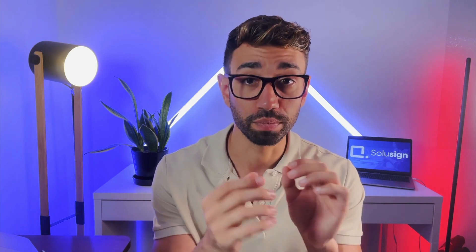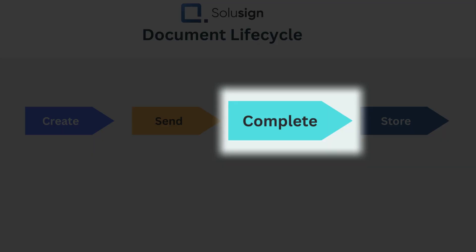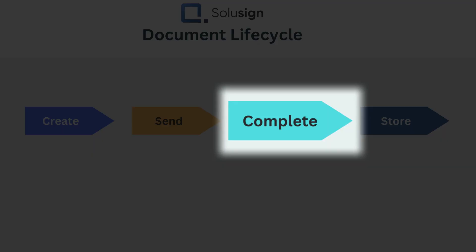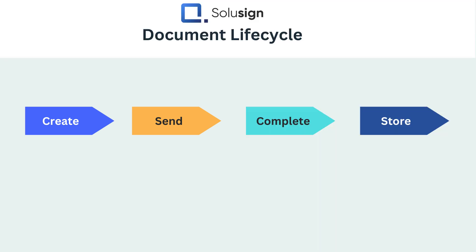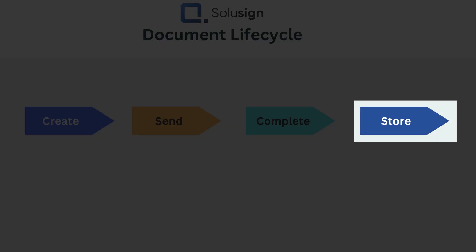This happens because DocuSign can only automate the completion phase when it's not integrated. DocuSign cannot automate what happened before or what happened after, because DocuSign would need to access other systems — and without an integration, it's not possible.